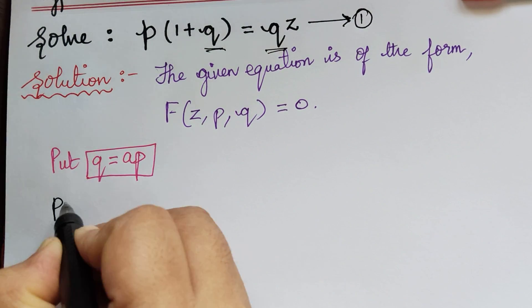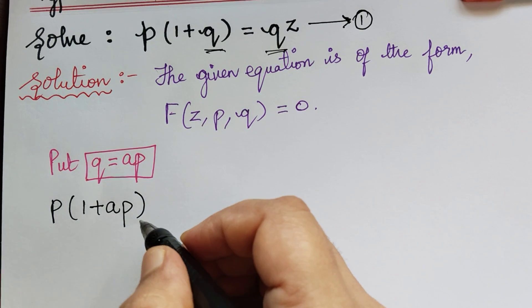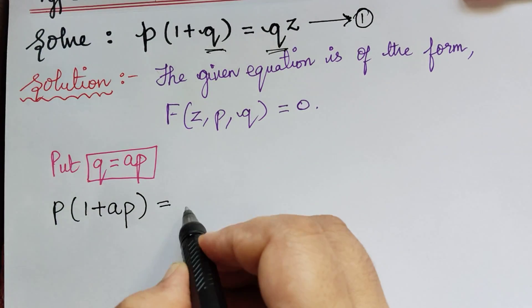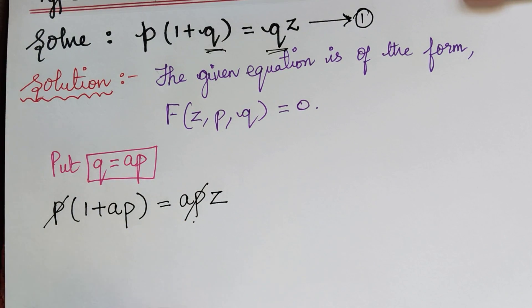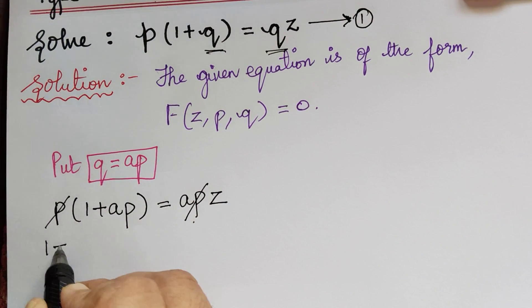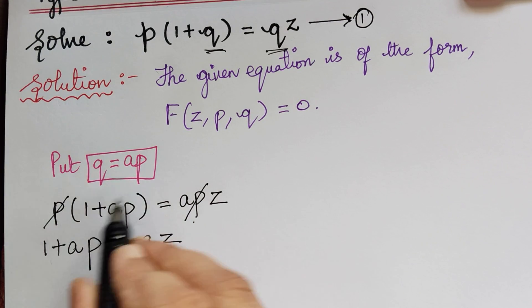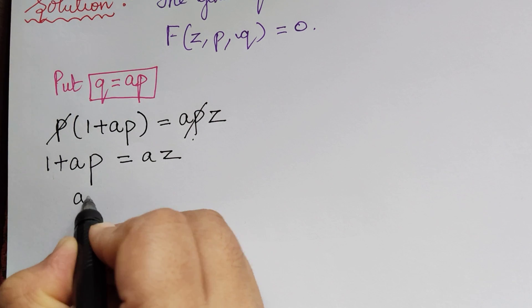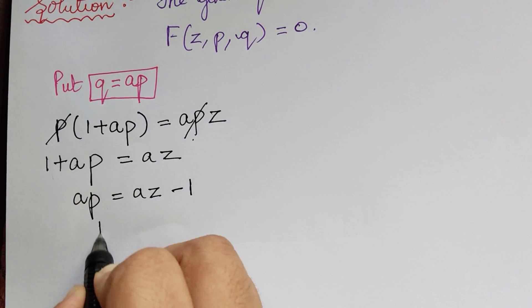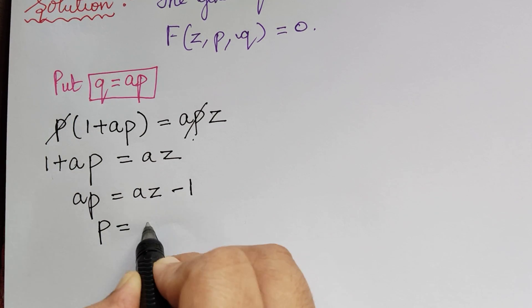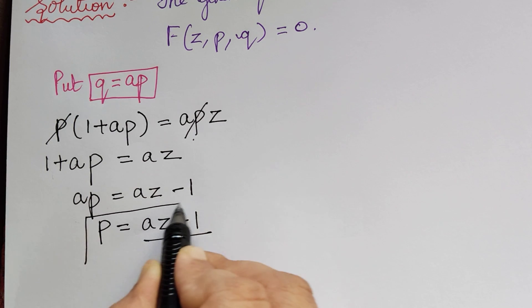After substituting q = ap, we get p multiplied with (1 + ap) = ap. Here this p and this p cancel, giving 1 + ap = az. Taking 1 to the right, we get ap = az − 1, so the value of p is p = (az − 1) / a.